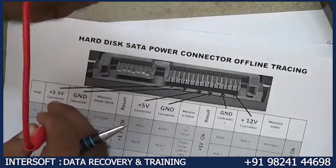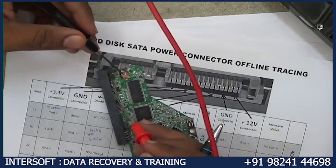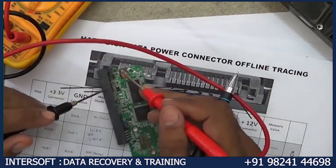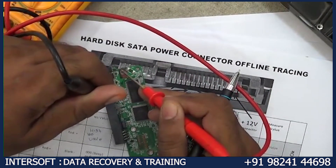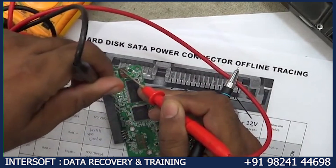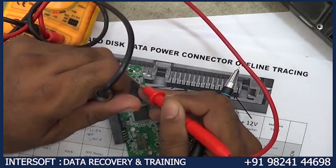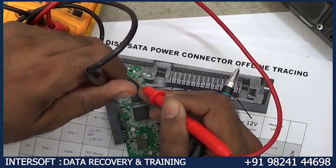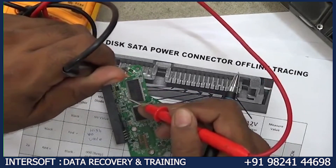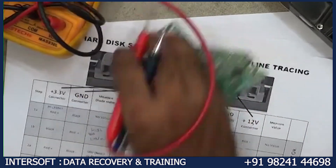We are testing offline. We check red probe on 3.3V — here you can see 3.3V. So red here and black on ground — no value. And reverse: value comes and goes, it is a high value. For 3.3V it will not show a stable reading, but for 12V and 5V it will show the value clearly.